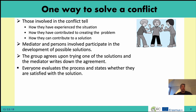For example, if you have a group of seven students and a conflict between three of them, the other members of the group would also participate in developing possible solutions, so it becomes a solution for the whole group. The group agrees to try one of the solutions, the mediator writes down the agreement, and then everyone evaluates the process and states whether they are satisfied with the solution.